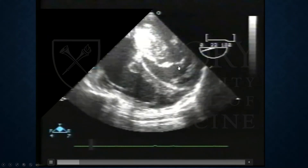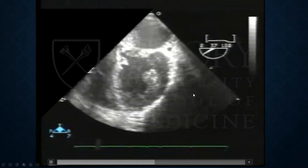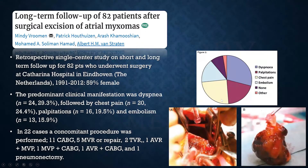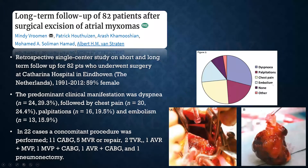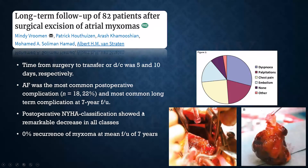A paper from the Netherlands retrospectively looked at 82 patients with left or right atrial myxomas excised successfully. The most common presenting symptoms were dyspnea, palpitations, chest pain, and embolization. Many patients had concurrent valvular or coronary surgery. The post-operative clinical course was very good, with a remarkable increase in NYHA classification post-op. However, AFib was the most common post-operative complication, occurring in as many as 22% of patients at seven-year follow-up, with 0% tumor recurrence at seven years.